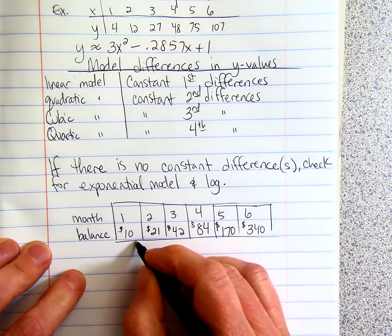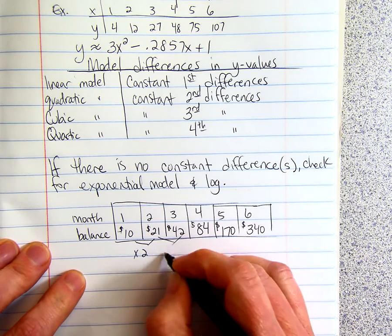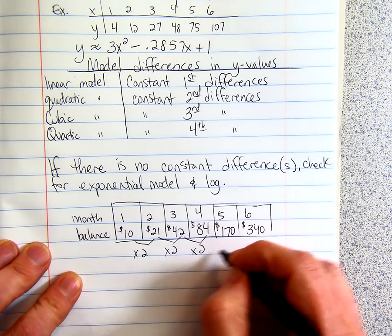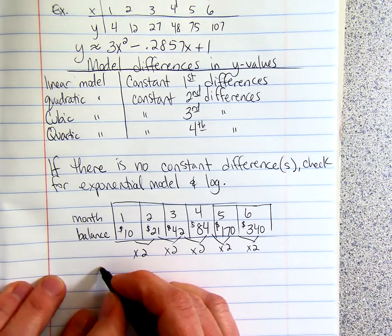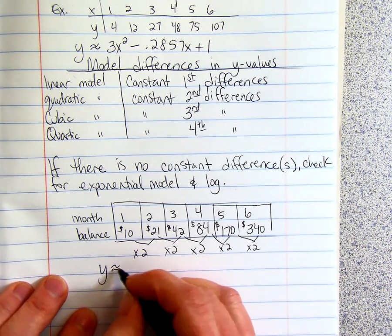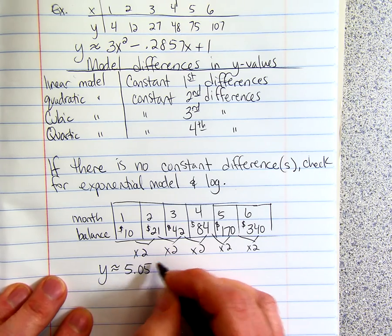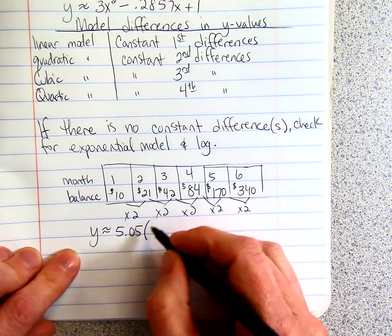It's just doubling. So this is times two, times two. Notice, that means it's exponential. So our model would be y is approximately 5.05 times two.